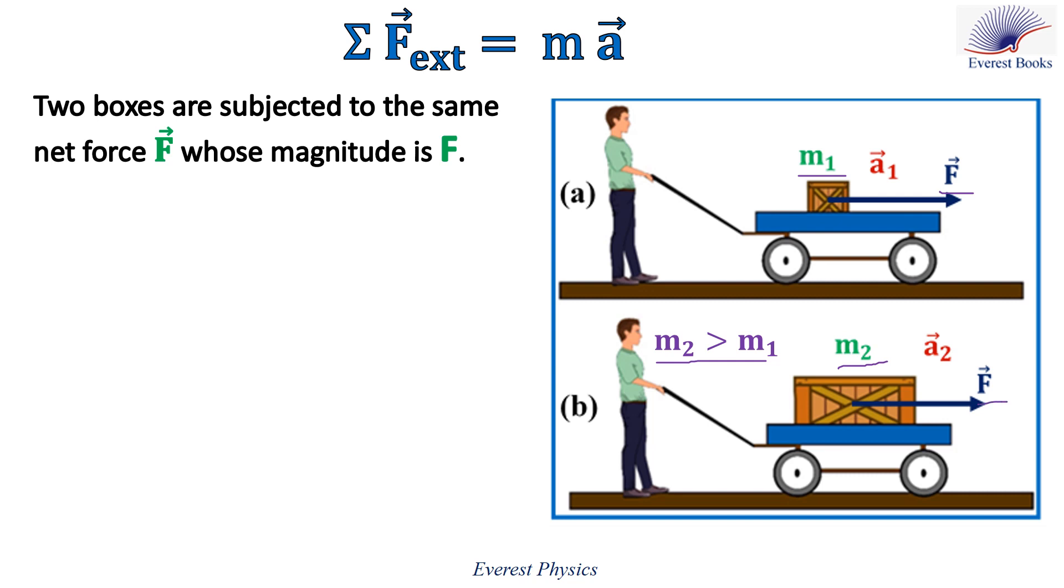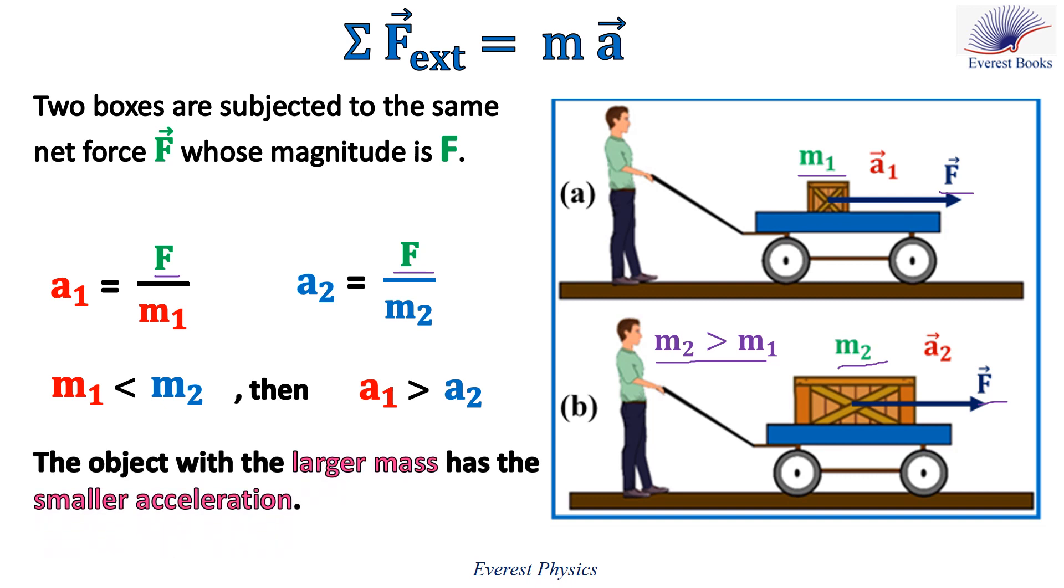Now let's apply Newton's second law to determine the magnitude of the acceleration of each box. The acceleration of the box in figure a is given by F over m1, while the acceleration of the box in figure b is given by F over m2. Since F is the same and m1 is less than m2, that means a1 is greater than a2. Or we can conclude that the object with the larger mass has the smaller acceleration.